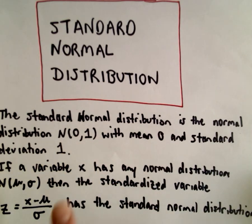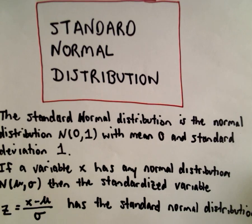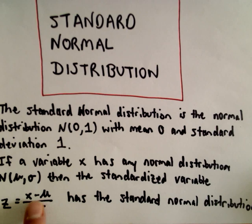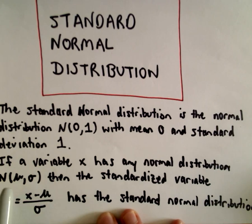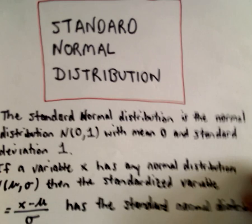If we have a new variable x with a mean that's normally distributed with a mean of mu and a standard deviation of sigma, the standardized variable z equals x minus mu divided by sigma has the standard normal distribution. It's just a way to transform a normal distribution that doesn't have a mean of zero and standard deviation of one. We can transform it back into one and then read off the values from the table.